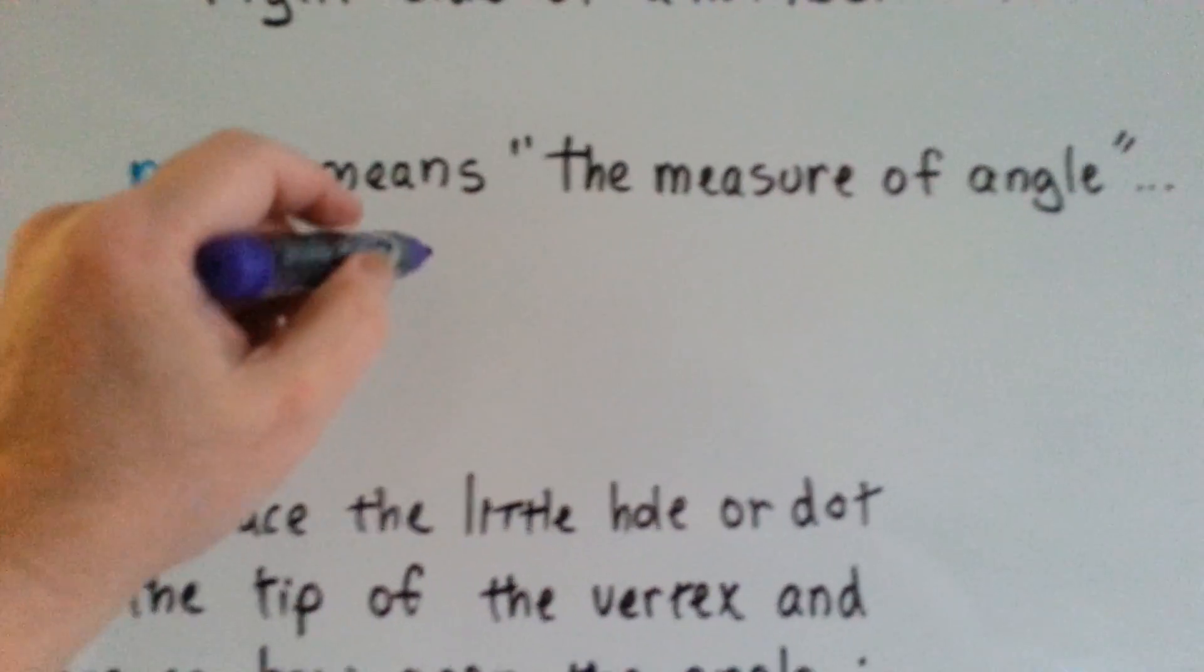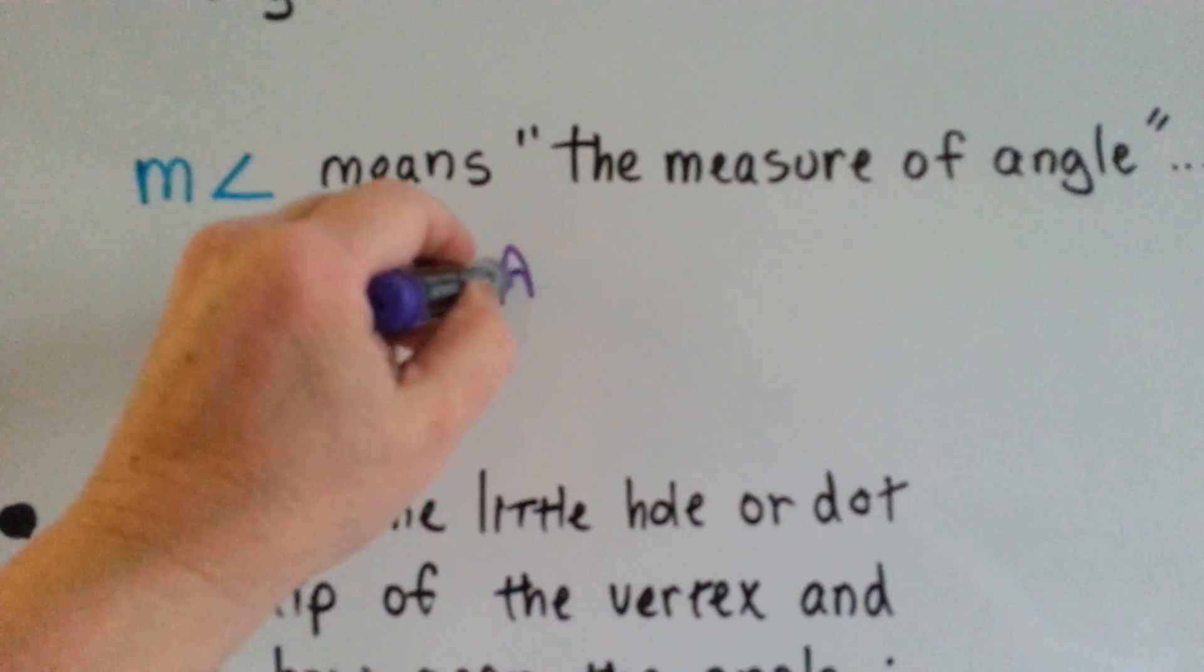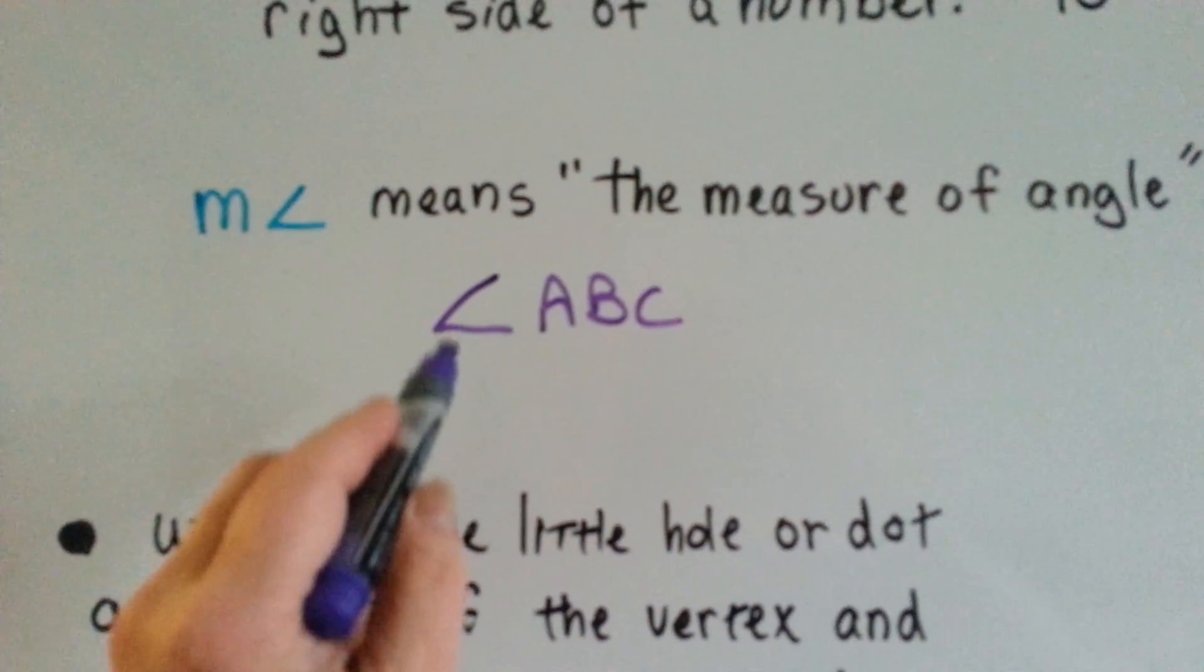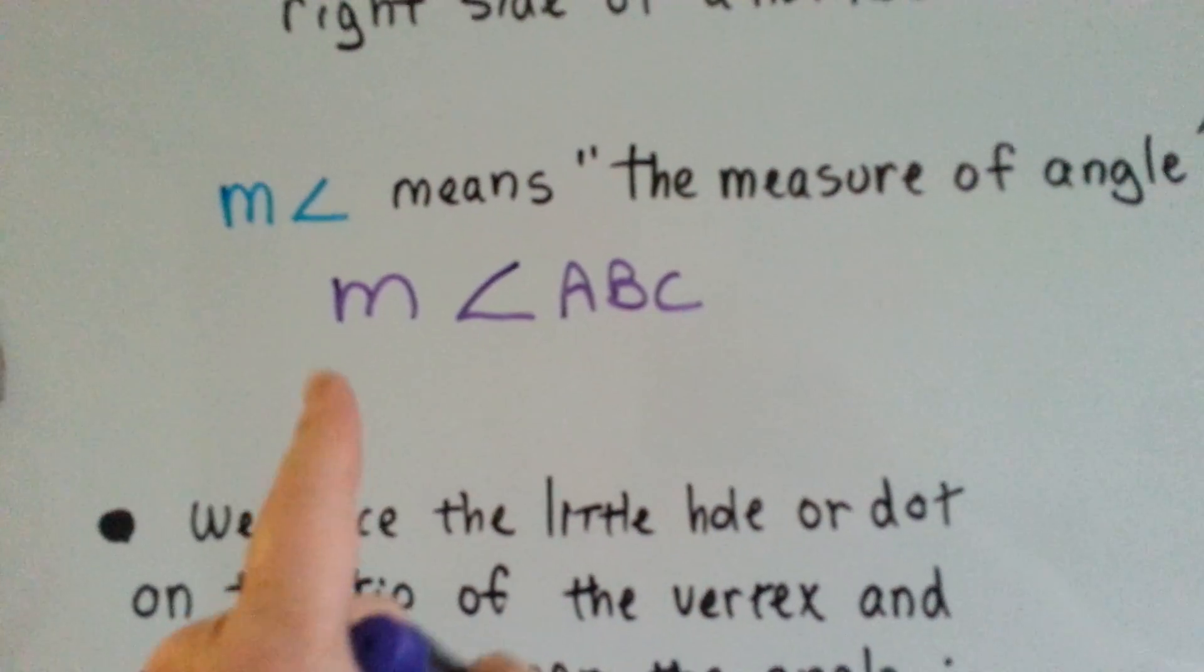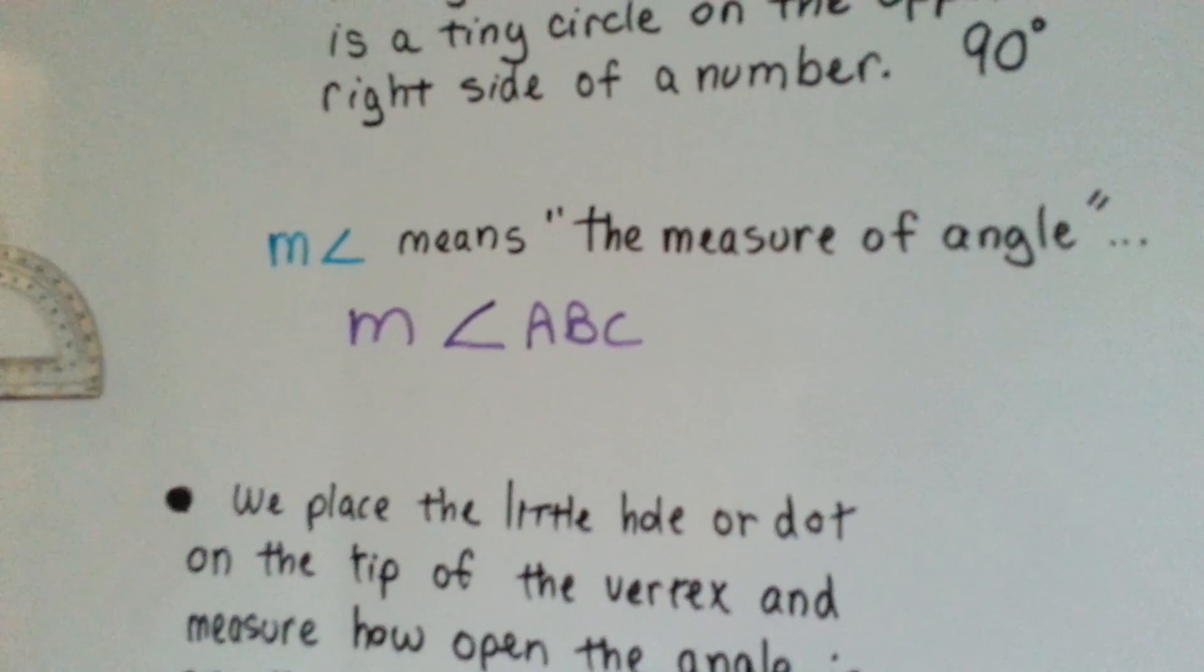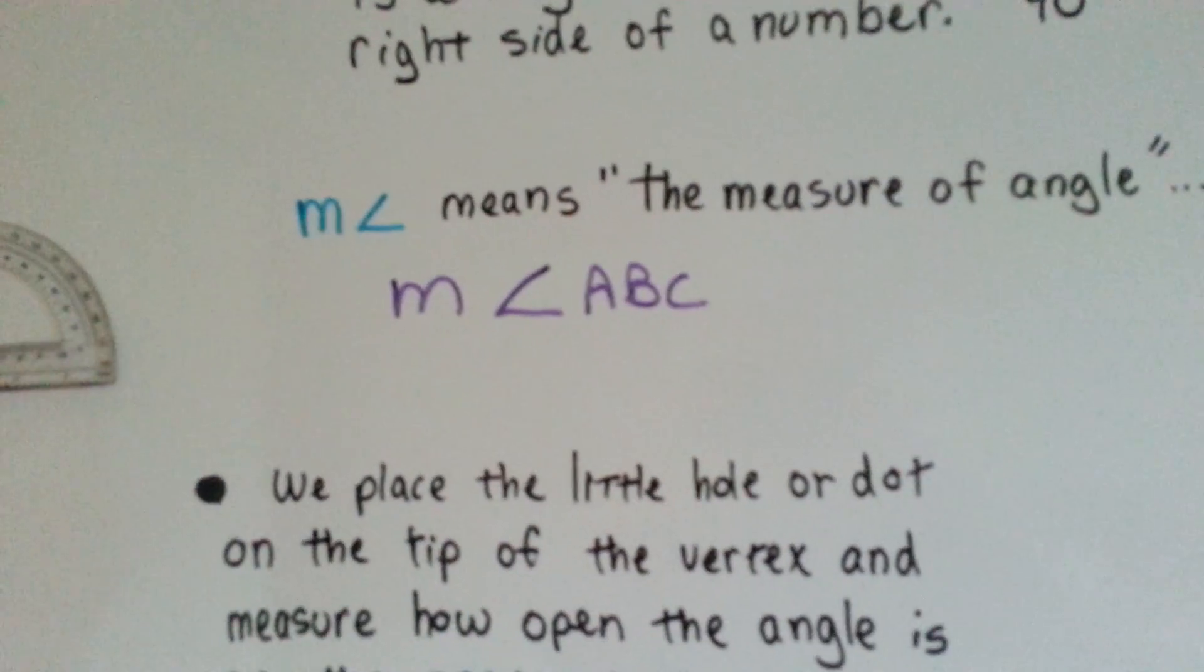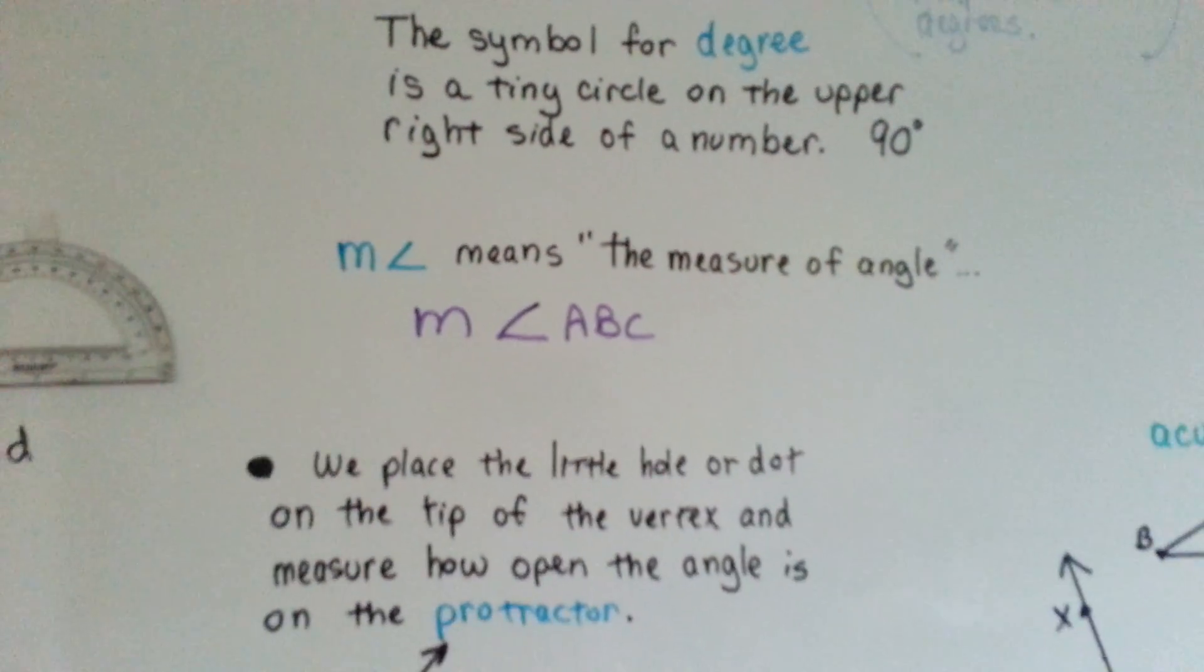If you remember from our other videos, if you saw this, it meant angle ABC. If we put an M in front of it, that means the measure of angle ABC. It means how many degrees, the size in degrees of the angle.